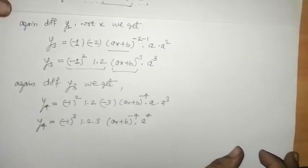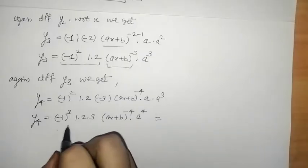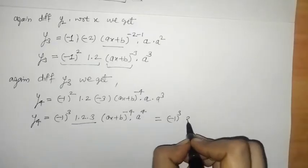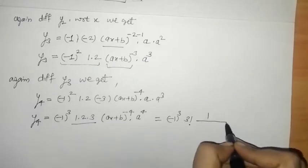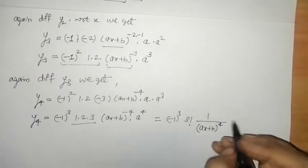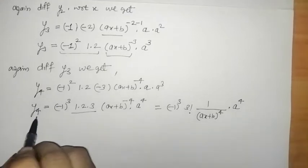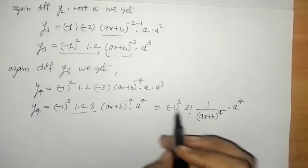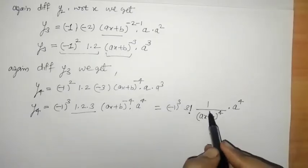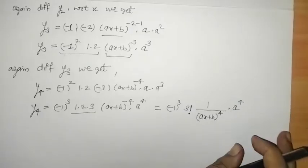Now we have found four derivatives and need to check the pattern. We can see that for y3 we have minus 1 squared, then 1 times 2 times 3, which we can write as 3 factorial. We can write 1 upon ax plus b raised to 4, and a raised to 4. Checking the 4th derivative: we have minus 1 cubed into 3 factorial, meaning the power is reduced by one, and the power of ax plus b and a is 4.